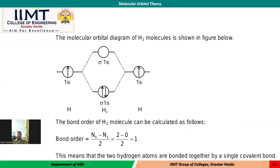Here is the molecular orbital diagram of the hydrogen molecule. Hydrogen has a 1s¹ electronic configuration, so the 1s orbital of one hydrogen combines with the 1s of another, forming two molecular orbitals: sigma 1s and sigma* 1s. Since bonding MOs have lower energy, both electrons fill into sigma 1s. Bond order = (Nb − Na) / 2 = (2 − 0) / 2 = 1, meaning the two hydrogen atoms are bonded by a single covalent bond and the molecule is stable.